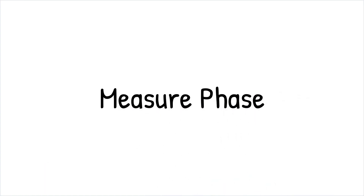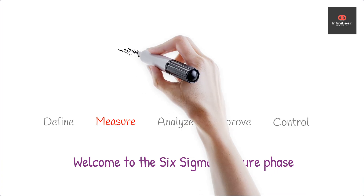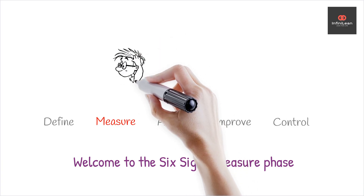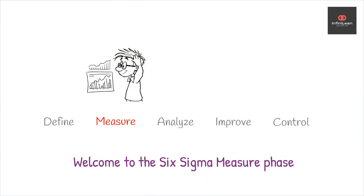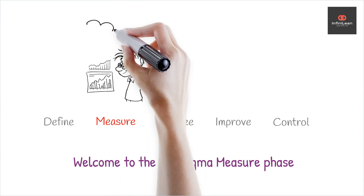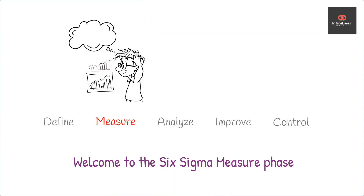Welcome to the Measure Phase from the DMAIC series. The Measure Phase is crucial in the DMAIC methodology, which stands for define, measure, analyze, improve, and control. In the Measure Phase, we aim to collect reliable data to understand a process's performance and pinpoint areas for improvement.